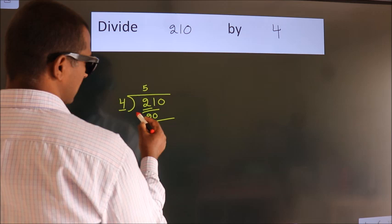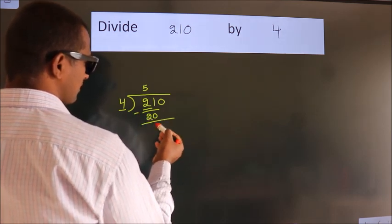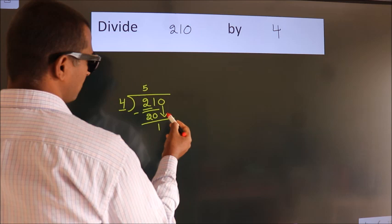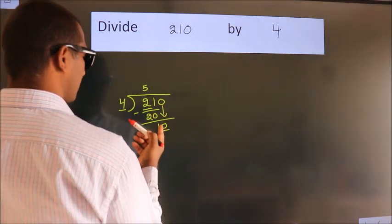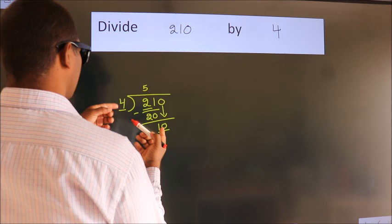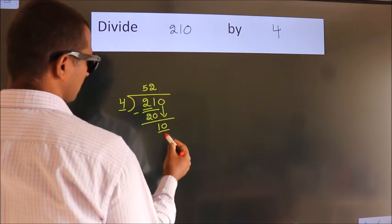Now we should subtract. We get 1. After this, bring down the beside number. So, 0 down. So, 10. A number close to 10 in the 4 table is 4 twos 8.